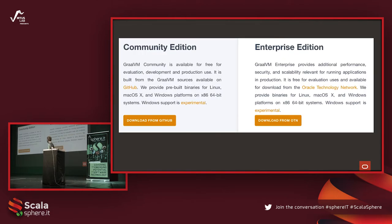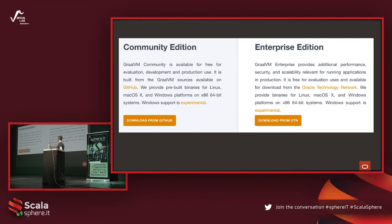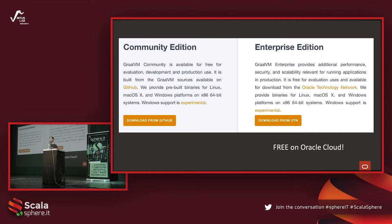GraalVM comes in two flavors. The Community Edition is completely free for development and production use, fully open source — you can download the source on GitHub. There is also an Enterprise Edition, which is essentially the same but with extra performance, extra security features, and Oracle product support with guaranteed response if you have any issue. The Enterprise Edition is also free on the Oracle Cloud. At Oracle Open World two weeks ago, Oracle announced a free tier on the Oracle Cloud — up to two VMs and a few database instances — so you can essentially run Enterprise Edition for free.